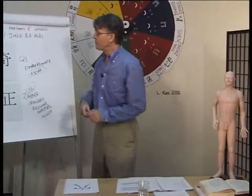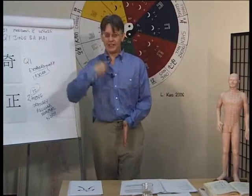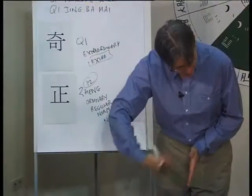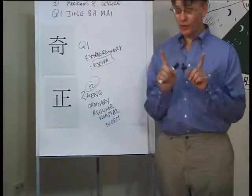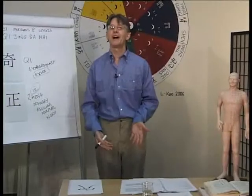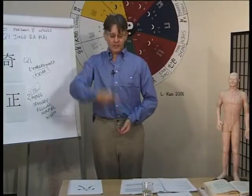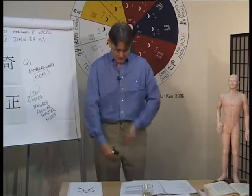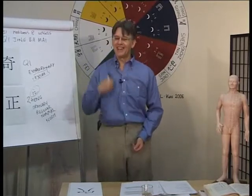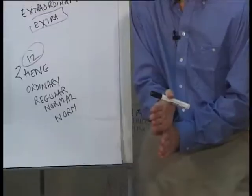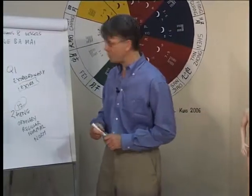And there are eight. I will talk in this DVD, after looking at the twelve ordinary, about two of the extraordinary. They are Ren Mai and the Du Mai, which is the sea of yin and yang, which are ever circulating in the core, the inner circle of your body. So we will look at those two.